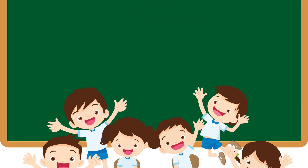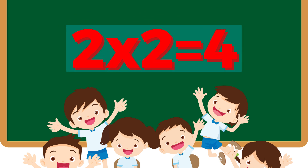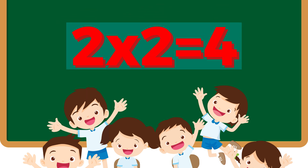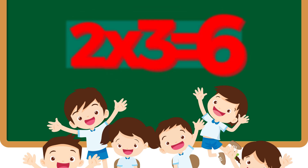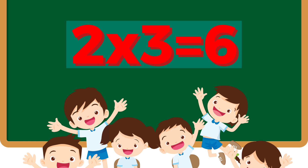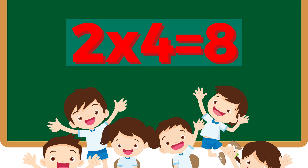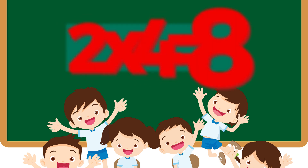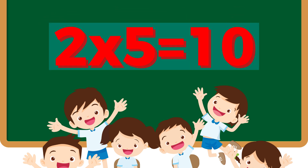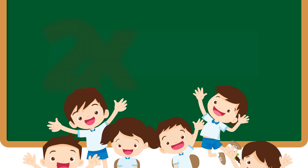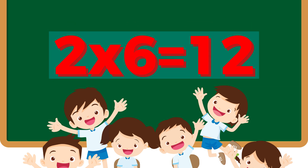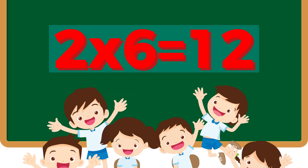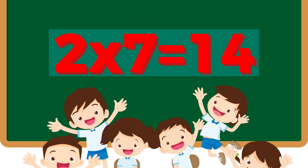Two twos are four, two twos are four. Two threes are six, two fours are eight. Two fives are ten, two sixes are twelve.